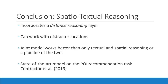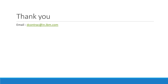To conclude, in this paper we presented a joint spatial-textual reasoning model incorporating a distance reasoning layer. We found that the model worked well with distractor locations and performed better than models involving only textual or spatial reasoning, or even a pipeline combination of the two. The model also establishes a new state of the art on the POI recommendation task released recently. Thank you for watching, and if you have any questions or comments, please feel free to drop me an email.